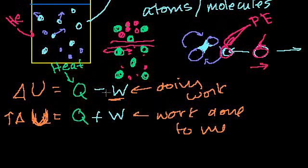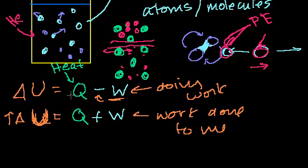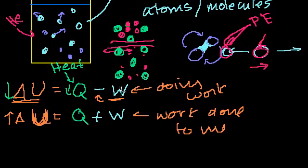If my total energy is going up, either heat is being added to my system or work is being done on me — energy is being transferred into my system. If my energy is going down, either heat is being taken away from my system or I am doing more work on something. And I'll do a bunch of examples with that.